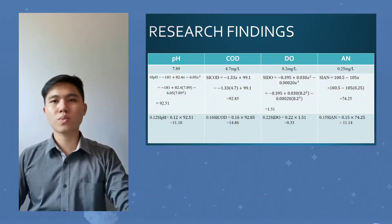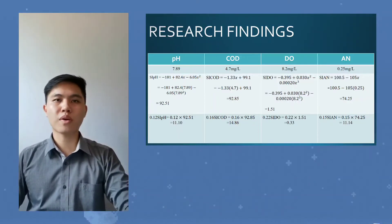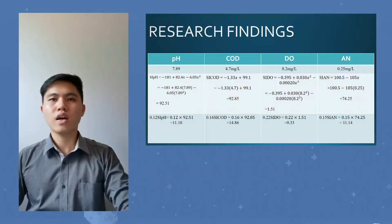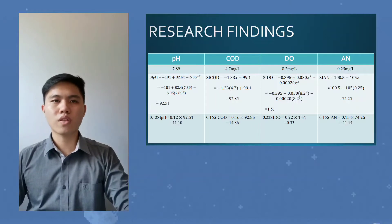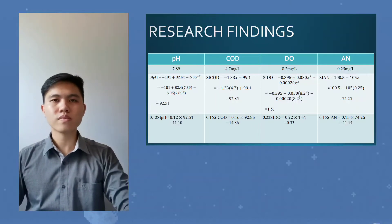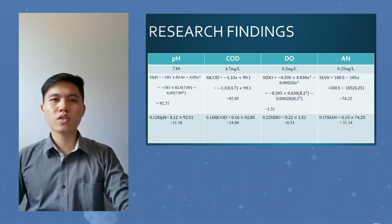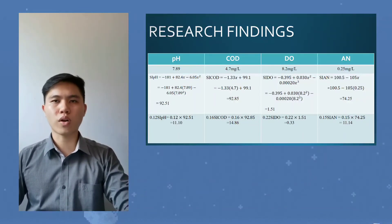Selecting a suitable subindex formula for each parameter, we get pH with 92.51, COD with 92.85, DO with 1.51, and ammonia with 74.25. By using the WQI formula, we get the value of pH with 11.1, COD with 14.86, DO with 0.33, and ammonia with 11.14.